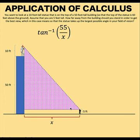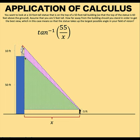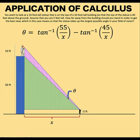Now, let's draw another triangle, this time connected to the bottom of the statue. The angle of elevation here would be the inverse tangent of the opposite side, which is, in this case now, 50 minus 5, which is 45 divided by x. And if we subtract these two angles, the resulting difference would be the measure of this theta, which is the angle that we would like to maximize.